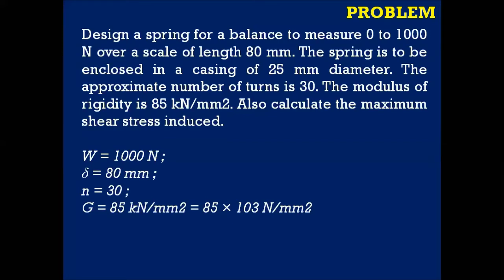The spring is enclosed in a casing of 25 mm diameter — that enclosure must have a diameter of 25 mm, so the outside diameter of the coil is 25 mm. The number of active turns is given as 30. Modulus of rigidity G is equal to 85 × 10³ Newton per mm squared.